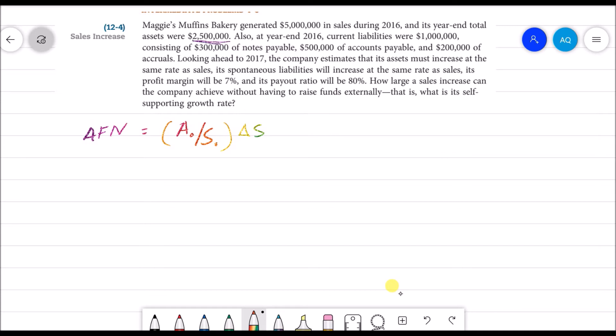AFN = (A/S₀)ΔS - (L/S₀)ΔS - M(S₁)(1 - POR), where we want to know the sales. We don't have sales of next year; we have sales of current year, which we call S₀.